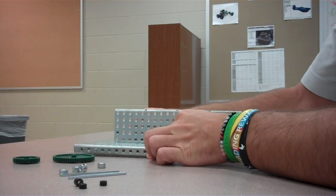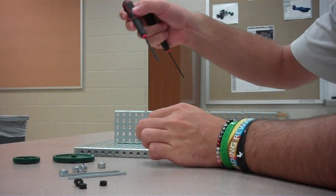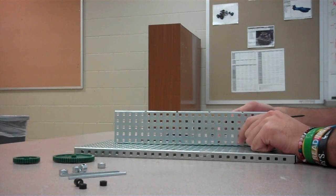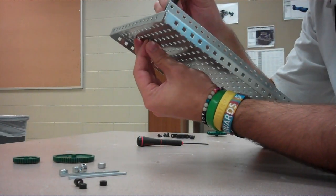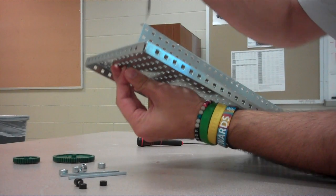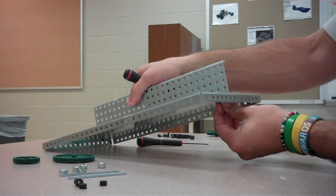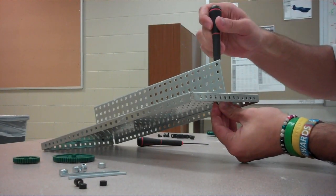Tighten it on there. If you want to take the Allen wrench, you can tighten it up, make sure it stays like that. Make sure you hold the other end so it sticks in place.